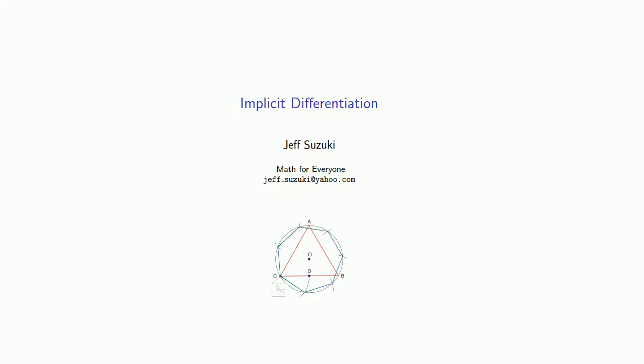The chain rule is important as a method of finding derivatives, but what makes it a power tool of differentiation is the use of what's called implicit differentiation.